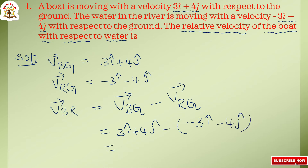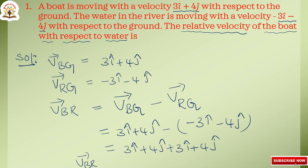So this equals 3i cap plus 4j cap plus 3i cap plus 4j cap, which gives Vbr equal to 6i cap plus 8j cap. This is the final answer.